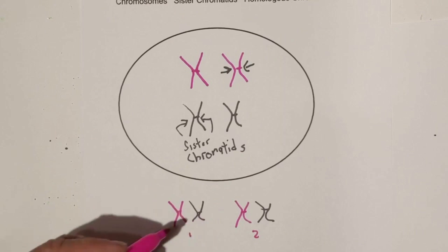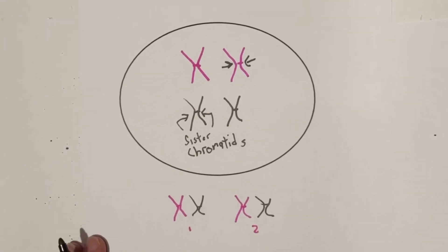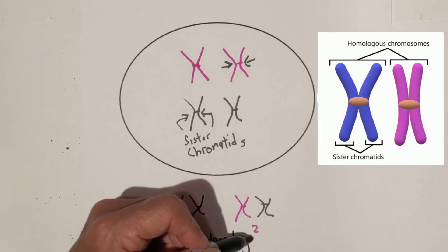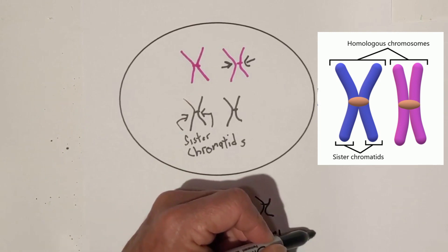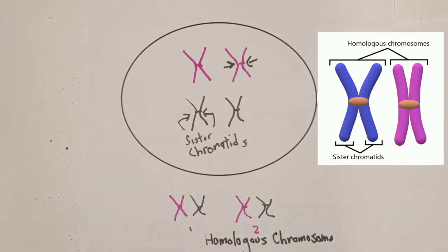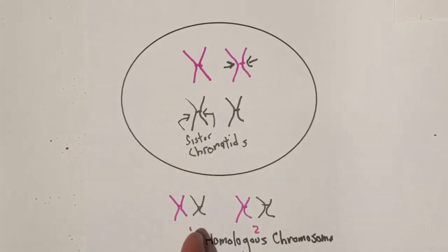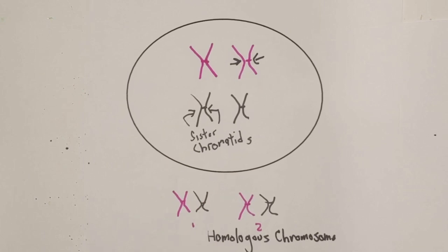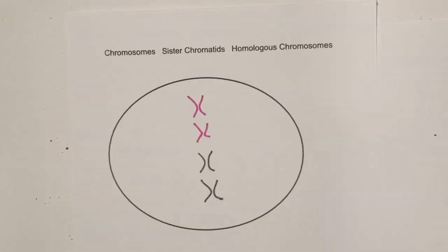One chromosome is from the female and one is from the male, and this is called a homologous chromosome. You have two chromosomes that have been stained during prophase — the genes are in the same places, one is from the female and one from the male. That's a homologous chromosome.